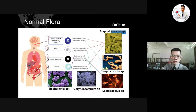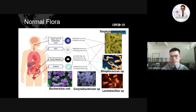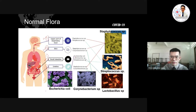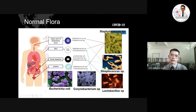The first location where you can find normal flora is the upper parts of the respiratory tract — there you find Staphylococcus and Streptococcus. For the skin, the two types of normal flora are Staphylococcus and Corynebacterium. In the small intestine, there are three types: Escherichia coli, Lactobacillus, and Staphylococcus. At the urethra, the normal flora are Staphylococcus and Corynebacterium. You need to remember which part of the body has which type of normal flora.